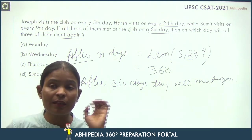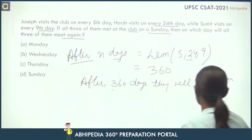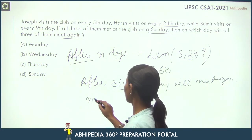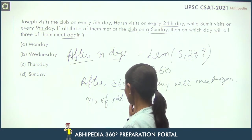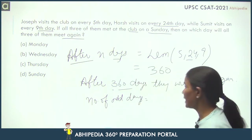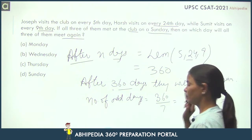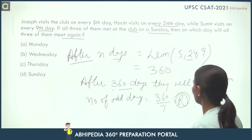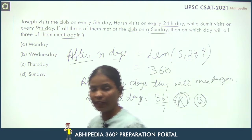Now here the concept of calendar comes in. Whenever you get this kind of value, we will find the number of odd days. Number of odd days means — we know there are seven days in a week, so we divide by 7. The remainder will be equal to 3.